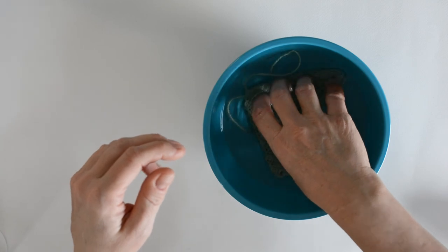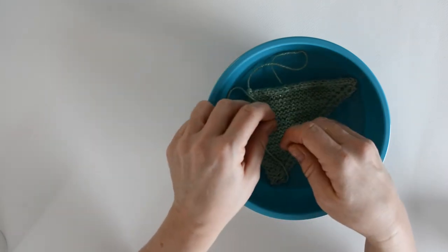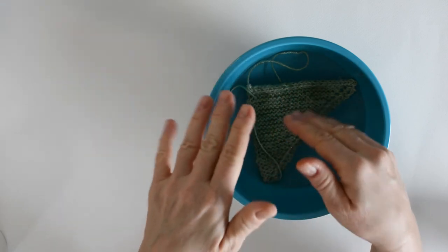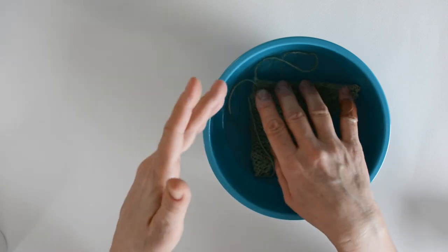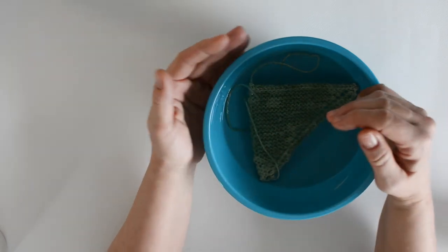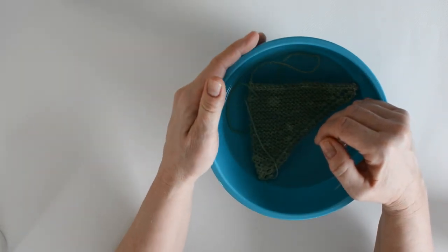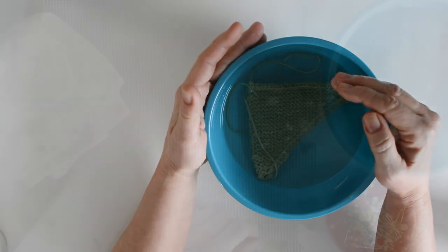Then I take my shawl and I soak it. I want to get it all in there. You don't want to rub. You don't want to squish it and wring it. You want to treat the yarn as gently as possible, so just very gently push it in there, and then you let it sit in the water for at least 15 minutes. You could do it overnight if you wanted to.